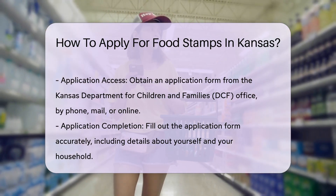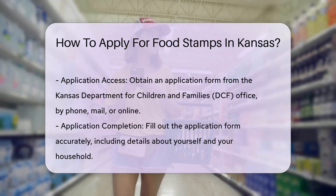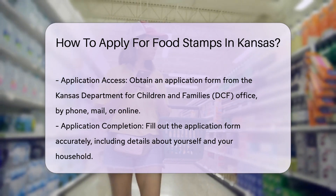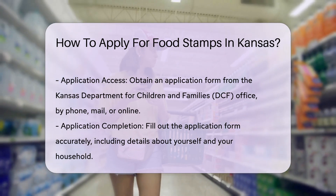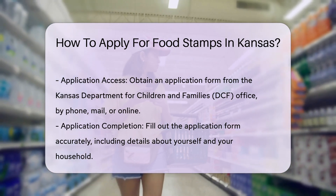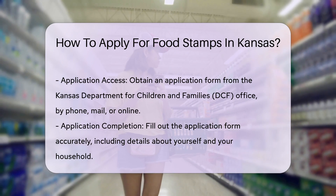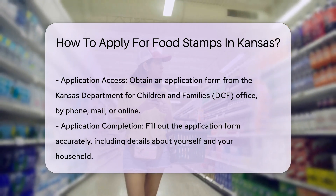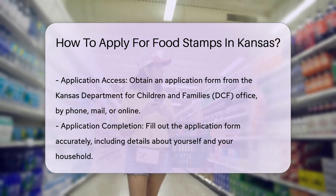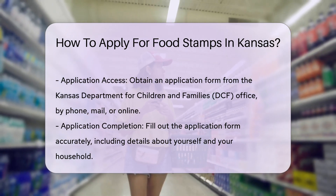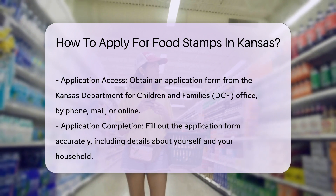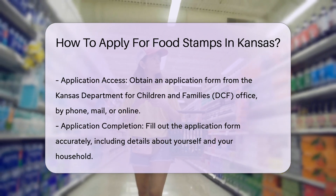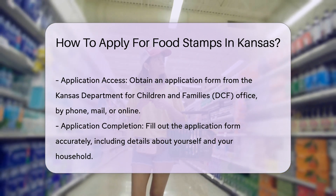Step 4: Fill out the application. Complete the application form thoroughly and honestly. The form will ask for details about yourself and the people in your household. You will need to sign the application to certify that all your answers are true.